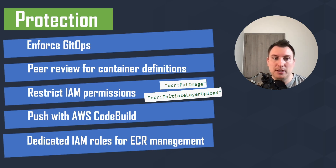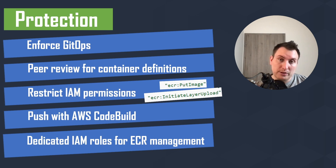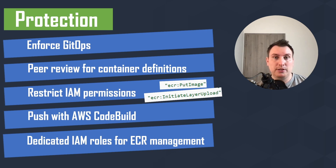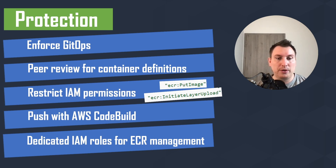I really recommend enforcing GitOps and restricting IAM permissions. Push images through AWS CodeBuild — it's a build service and part of a pipeline that can run vulnerability scans, linting, and other tests on your Docker container before deployment. It doesn't need to be done by humans, and you can also add a manual approval stage in AWS CodePipeline. Create dedicated IAM roles for ECR management — not all developers need ECR management permissions.